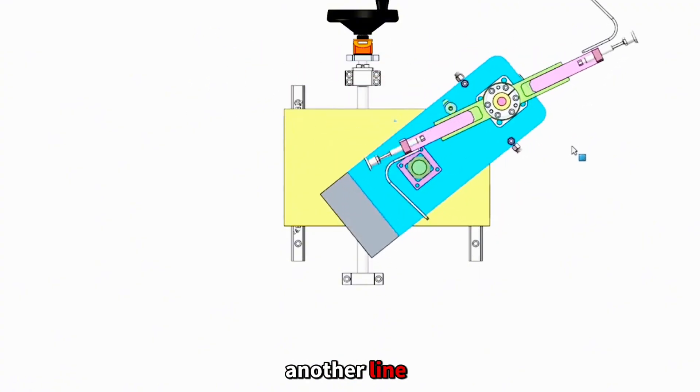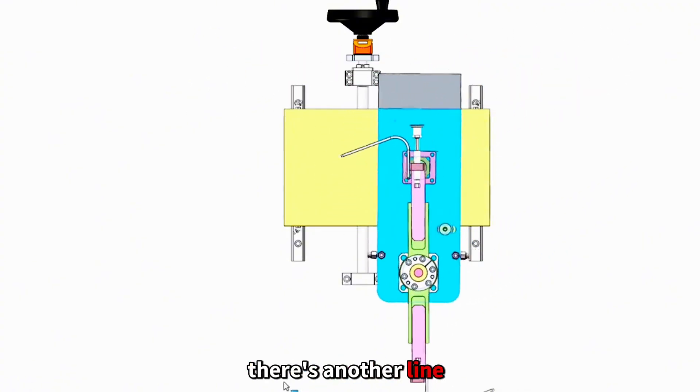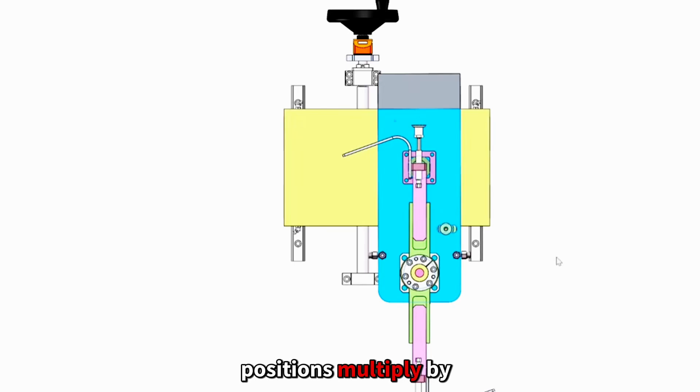120. So there's another line. There's another line. There's another line. And those three positions multiply by 120 degrees.